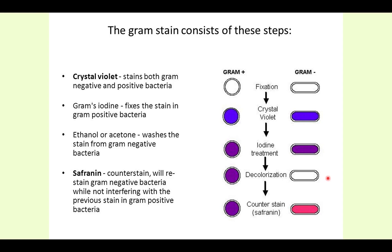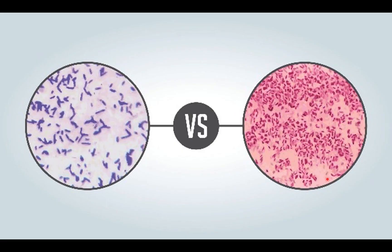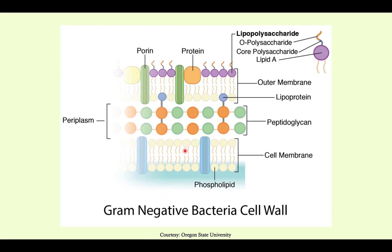What's really at play here is that peptidoglycan layer — that's most important to understand. This is a comparison of what gram-positive versus gram-negative look like under the microscope, and we will be constantly referring to pictures of different bacteria under a microscope as we go through these lectures, as you're probably already familiar from my gram-positive videos.